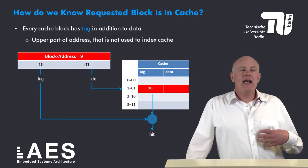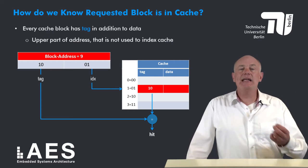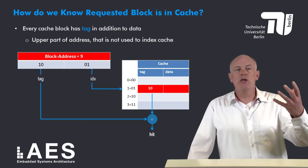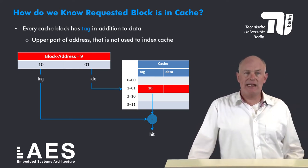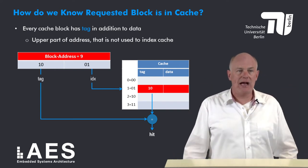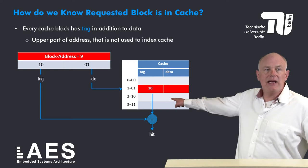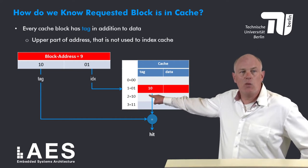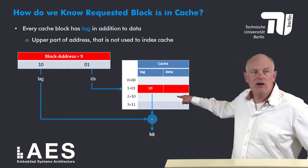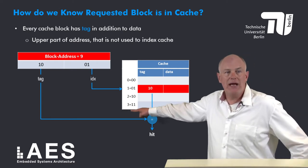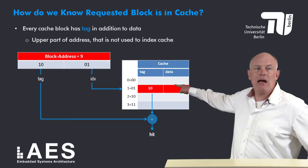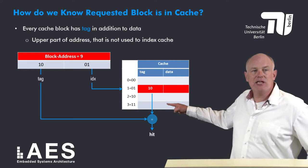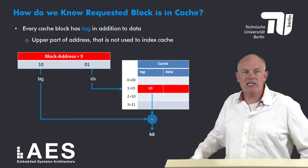The answer is every cache block has a tag in addition to the data. The tag corresponds to the part of the address that is not used to index the cache — it's the upper part of the address. For block address 9 (binary 1001), the last two bits give index 01 and the first two bits are the tag. We compare the tag stored in cache with the tag of the requested block, and if they are the same we have a cache hit — we know the data is present in cache.